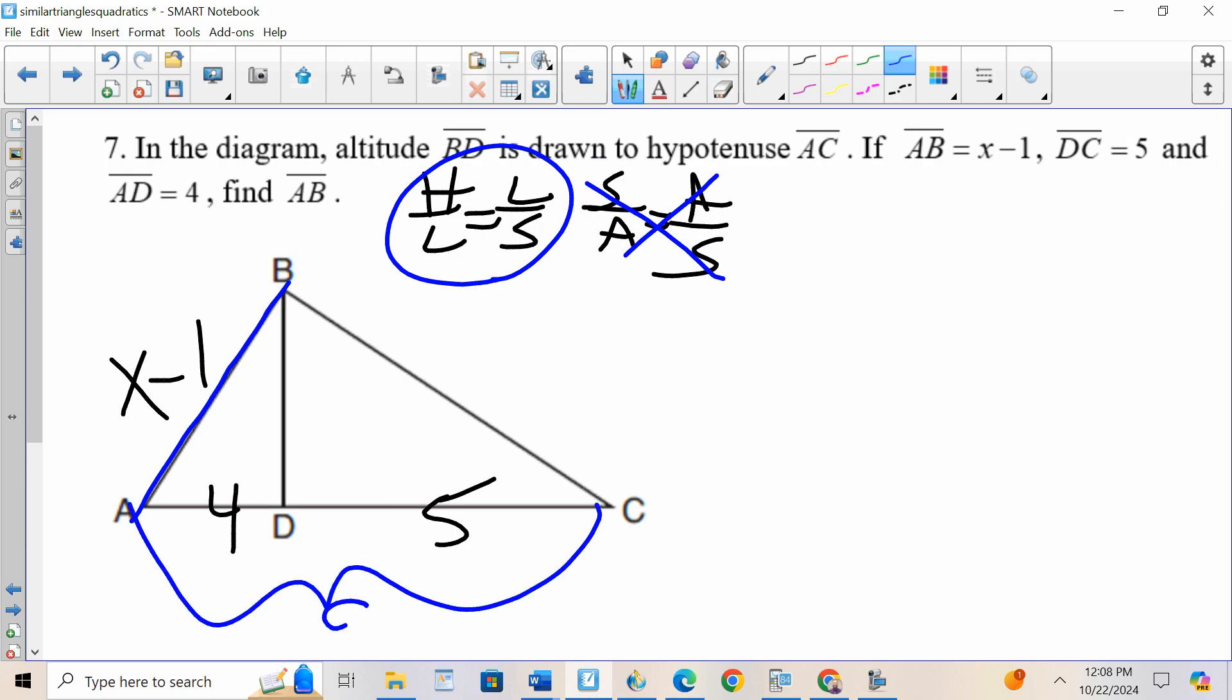H, this whole thing, 9 over L, X minus 1 equals L, X minus 1 over S. There's two S's. Since I'm using the left leg, I'm using the left seg, so I'll use the 4.